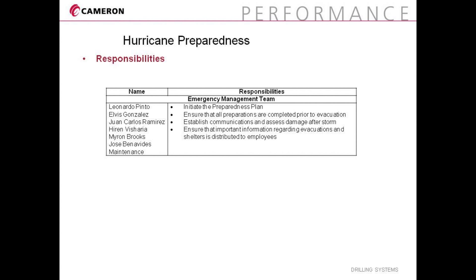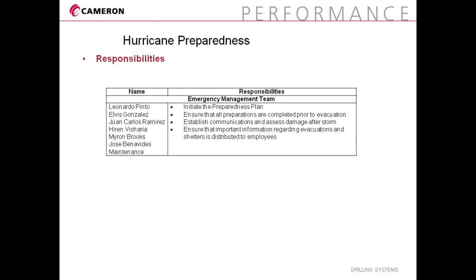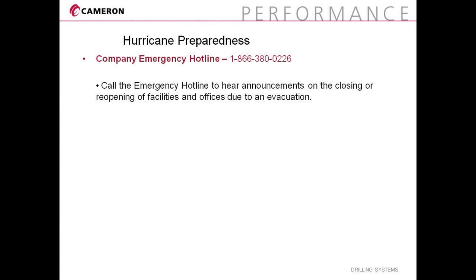Non-facility personnel — that is, visitors and contractors — should no longer be present at the facility during this phase of preparation. Employees may also call the Cameron Employee Emergency Announcement Hotline at 1-866-380-0226 for information pertaining to site closures, changed hours, or other important information. Additional time off for personal reasons due to an evacuation will be considered on a case-by-case basis.